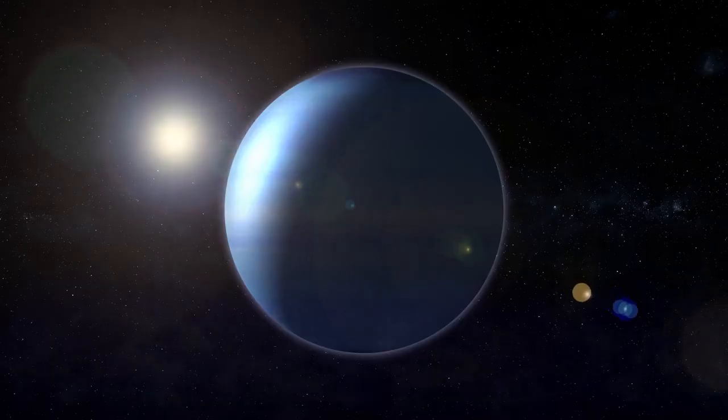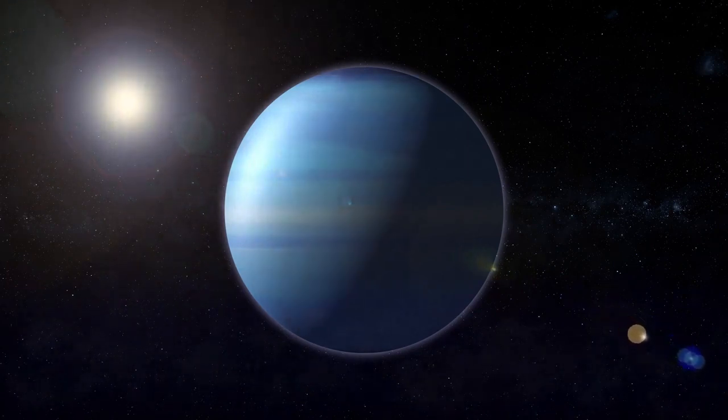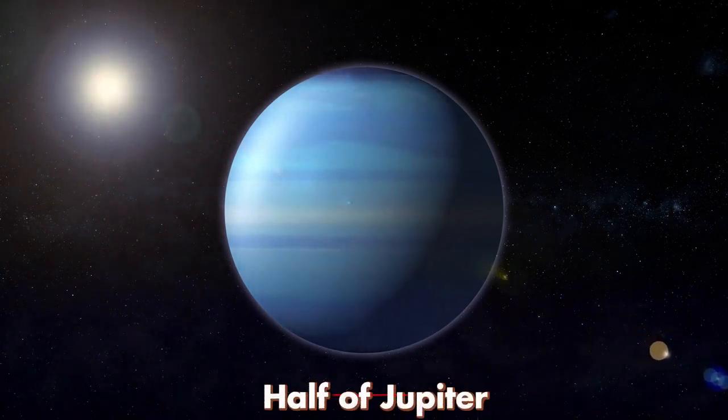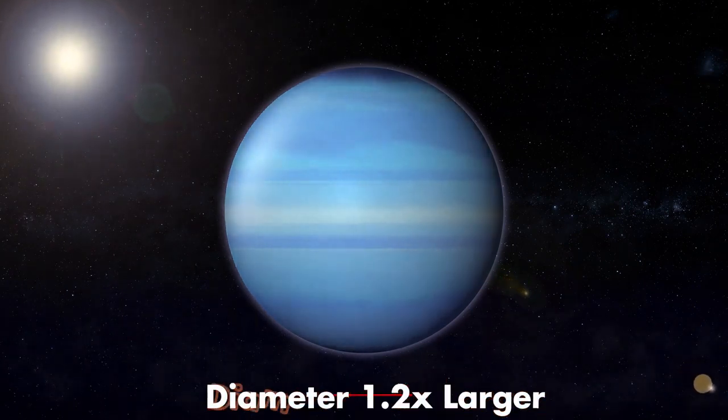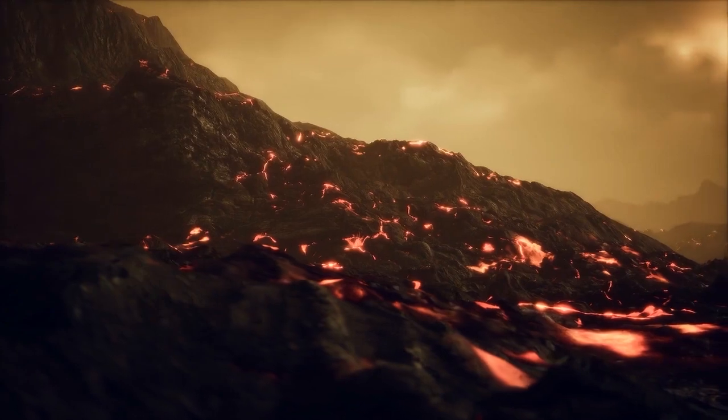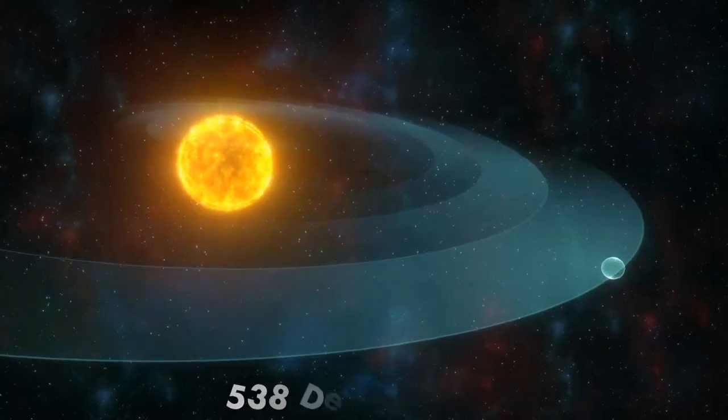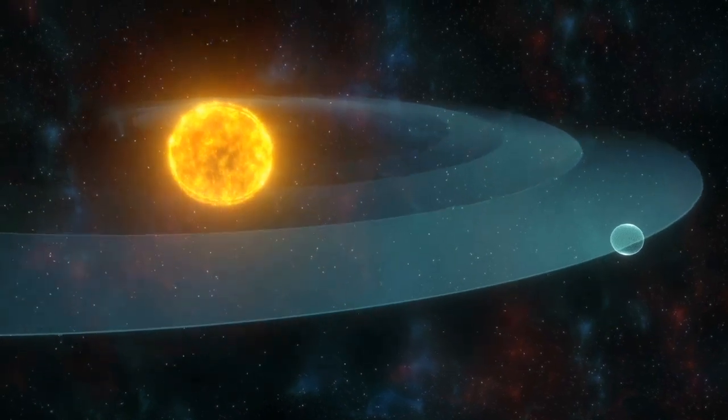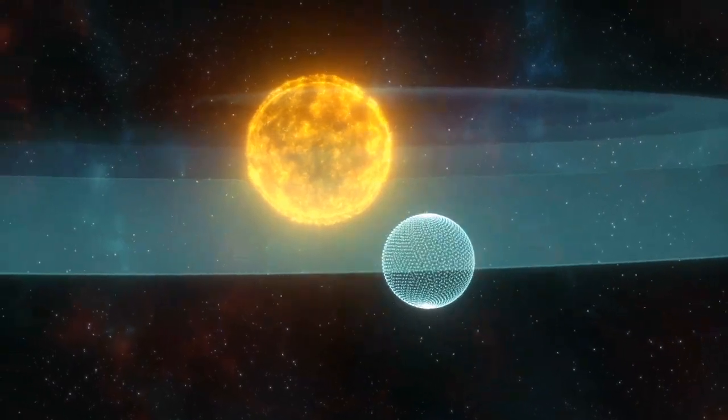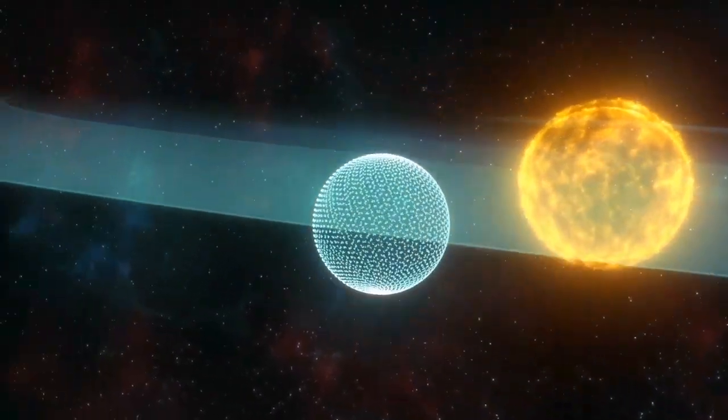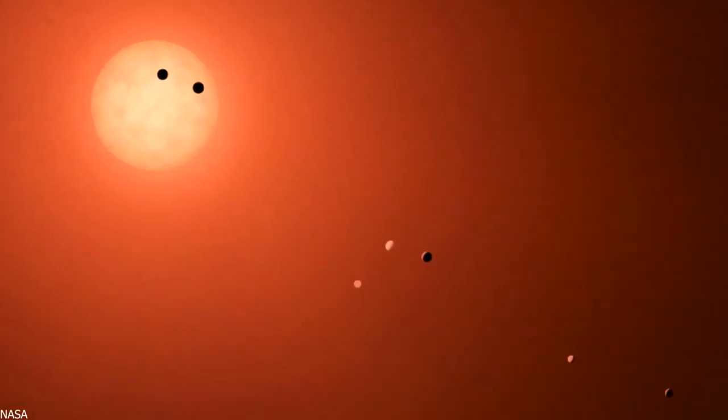WASP-96b is puffier than any planet orbiting our Sun. It has a mass less than half of Jupiter, and a diameter 1.2 times larger. It is also significantly hotter, with temperatures exceeding 538 degrees Celsius. NASA claims that WASP-96b makes one orbit around its sun-like star every three and a half Earth days, while orbiting at a distance one-ninth that of Mercury and our Sun.